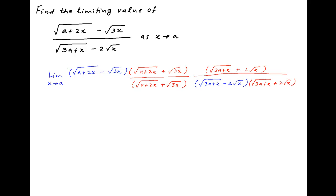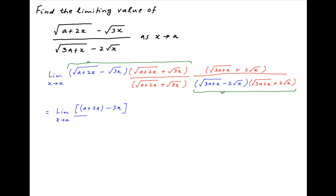Now combine the first two terms in the numerator. So the given limit is equal to limit x tending to a, a plus 2x minus 3x. Similarly, combine the last two terms in the denominator, which results in 3a plus x minus 4x in the denominator.